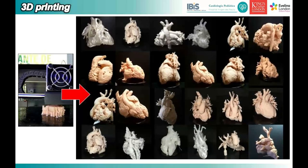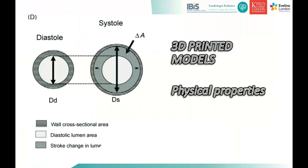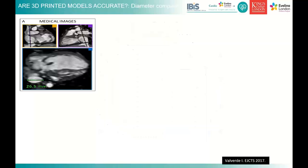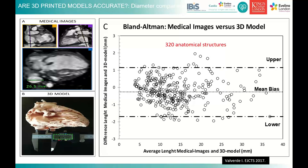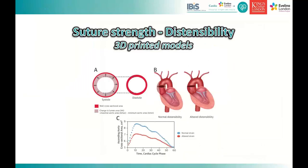3D printing really shows you the spectrum of congenital heart disease. Initially we used 3D printed models for interventional planning, but for that we needed proper validation. A key question is: how accurate is the 3D printed model? We compared measurements of 320 anatomical structures — like the IVC and aorta — between radiological images and 3D printed models. The result: the 3D printed models are very accurate, with a mean bias below one millimeter.